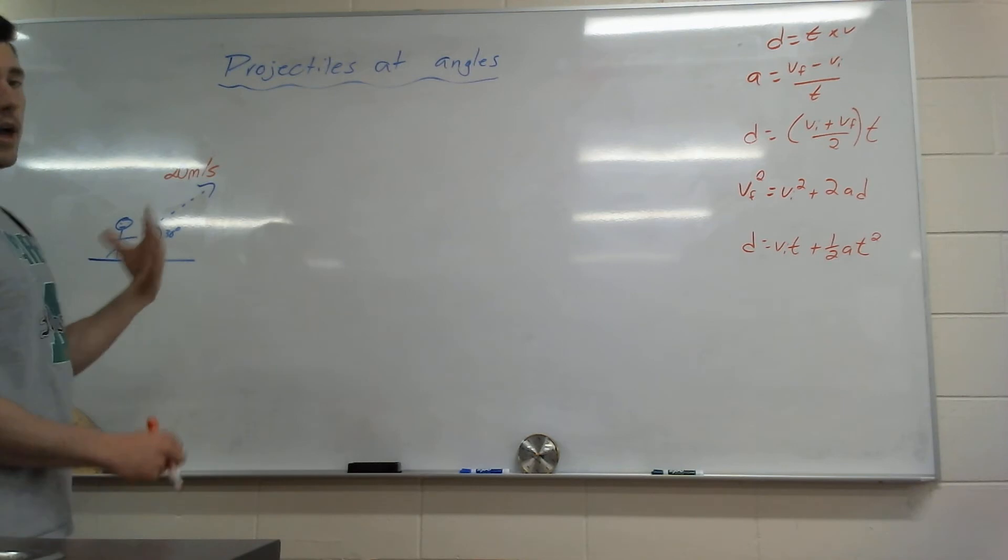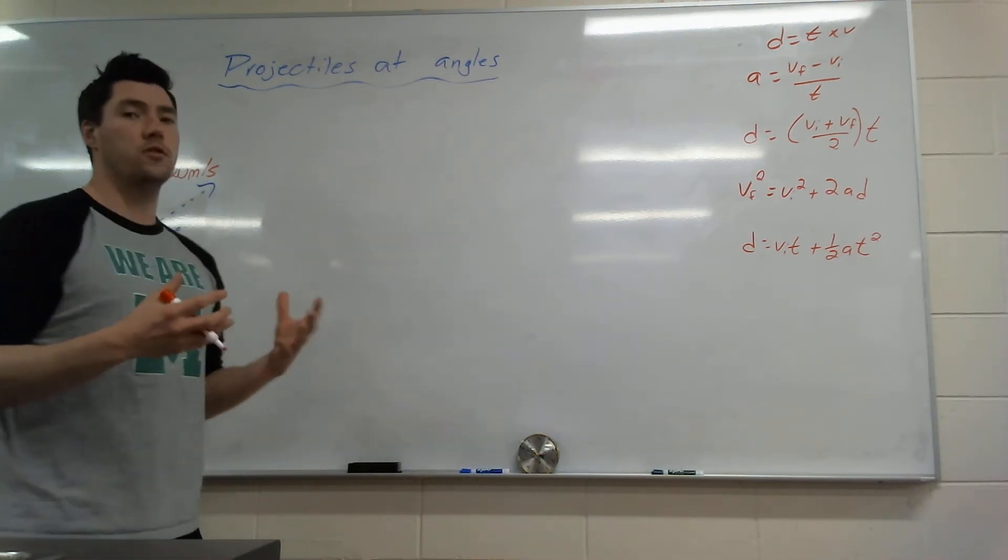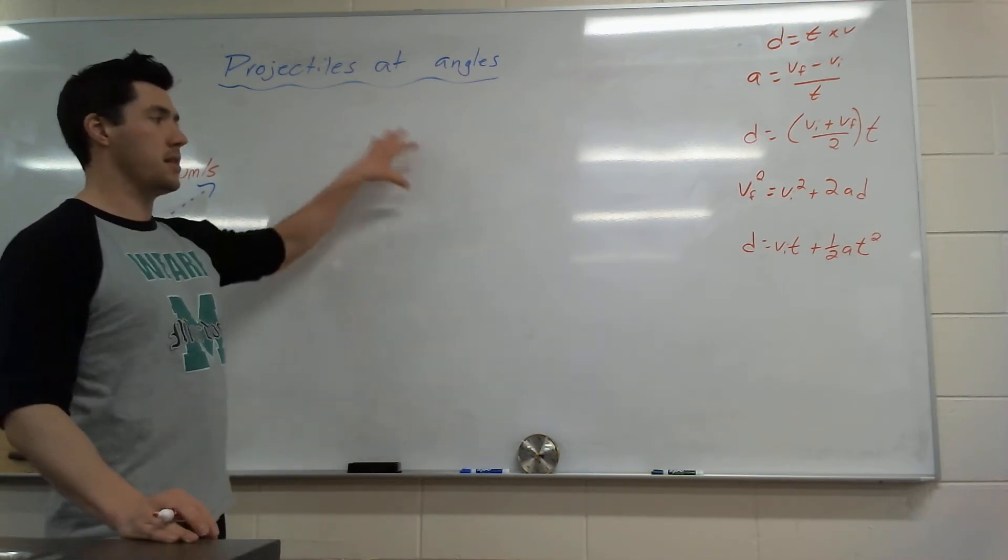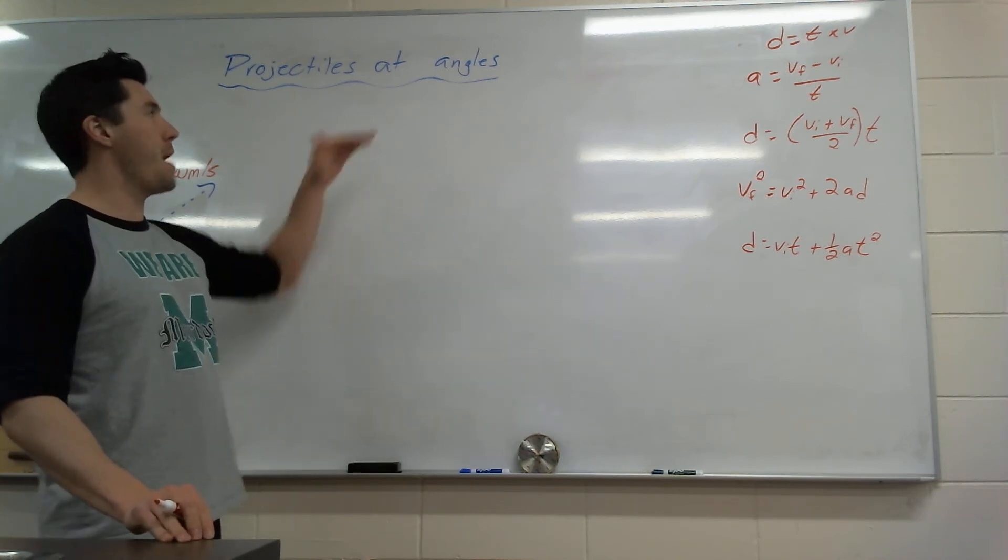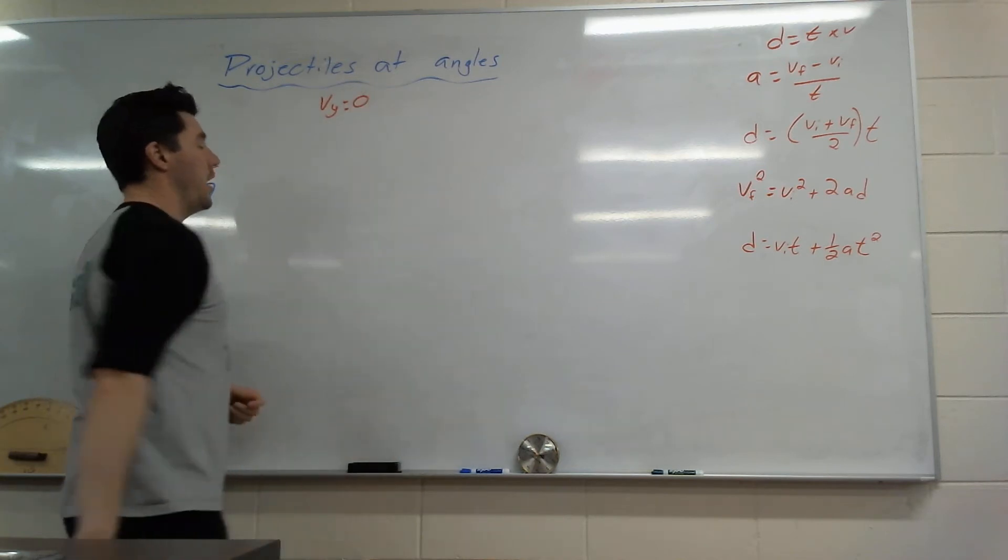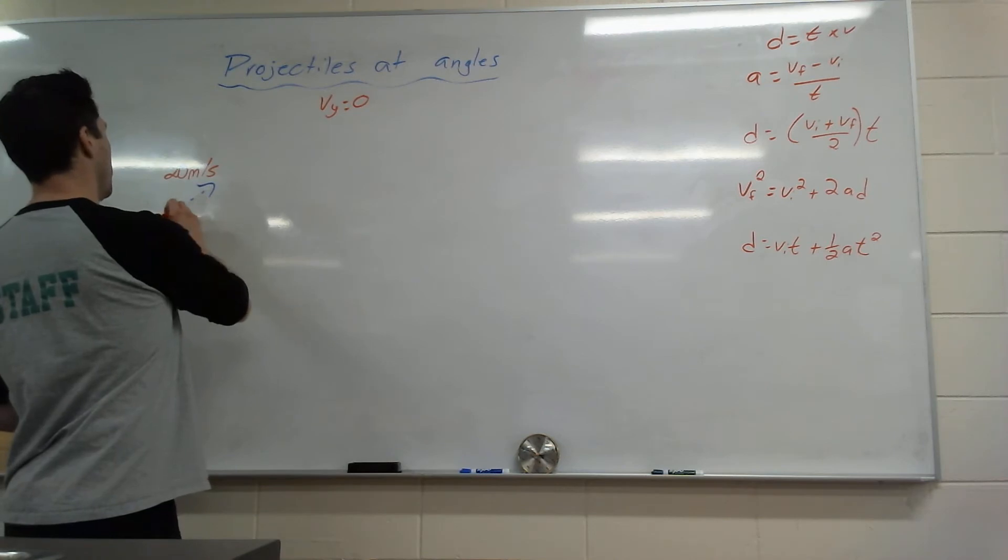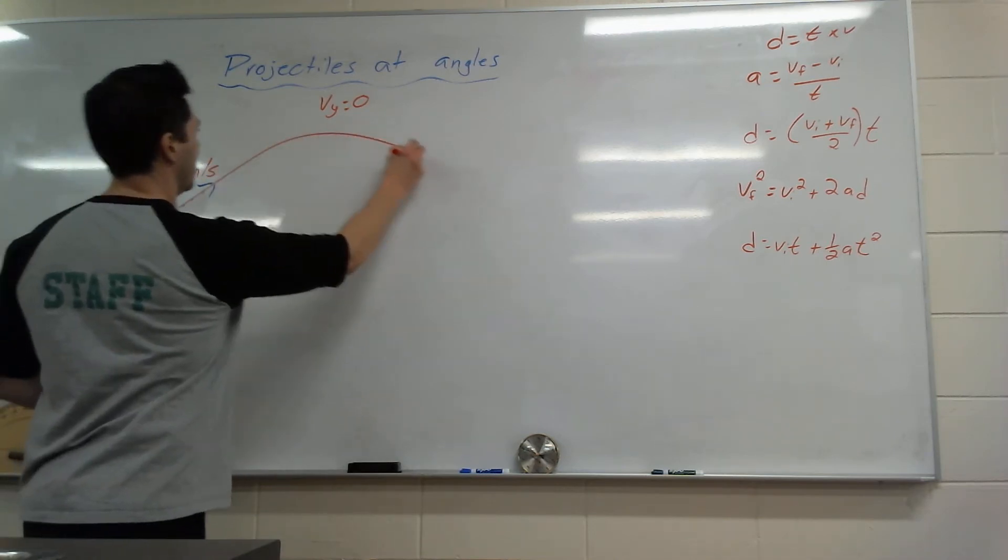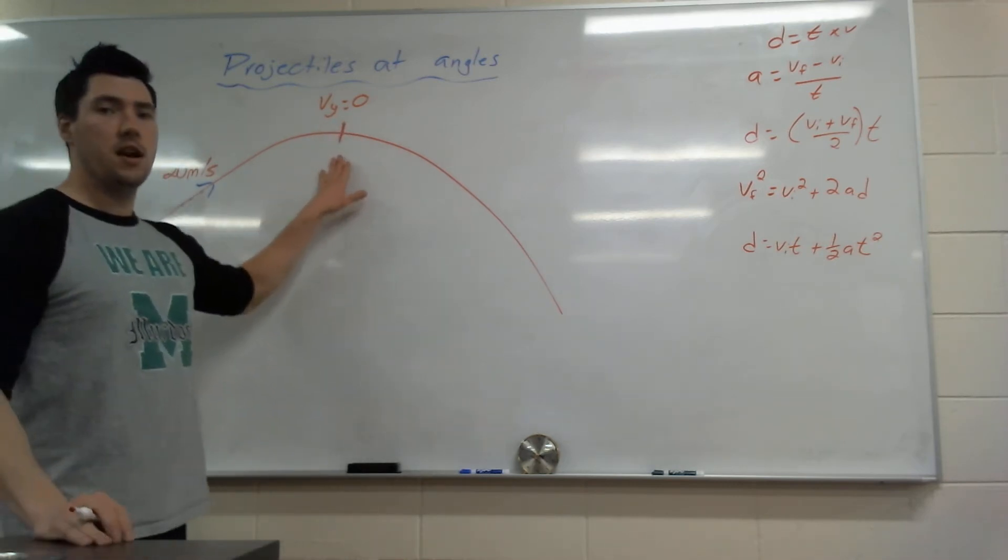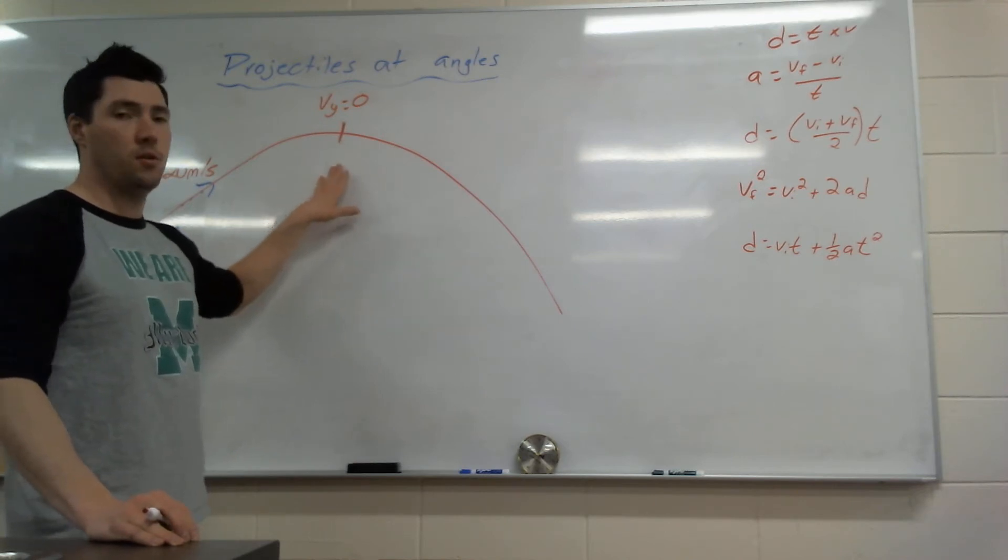The biggest thing that we need to know is for any question projectiles at angles, is we want to make it back to a horizontal, back to where there's no Vy, there's just a Vx. The way that we do that is we break it into its max point, we get Vy to equal zero. And when does that actually happen? Like if I imagine this, it's going to look something like this, here's my shot, it's going to go like this and back down. That happens right here. When it gets to the very top of the arch, when it gets to the very peak, the Vy is zero.